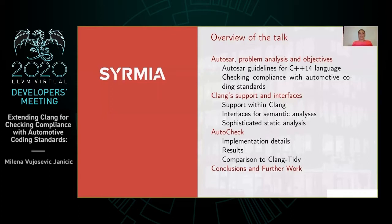Let me first give you a short overview of the talk. I will start with AUTOSAR guidelines to explain the problem and the objectives of our work. I will continue by taking a look at possibilities offered by CLANG and analyzing their strengths and weaknesses. Then I will discuss implementation details of the AutoCheck tool that we implemented as an extension of CLANG. Finally, I will give some conclusions and say something about our plans for future work.